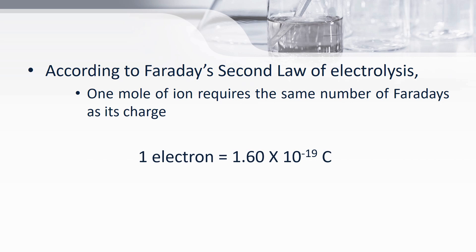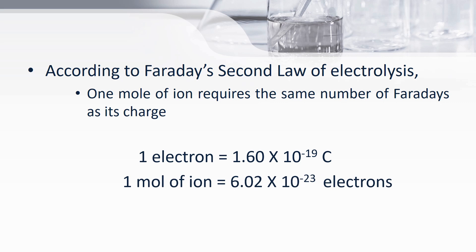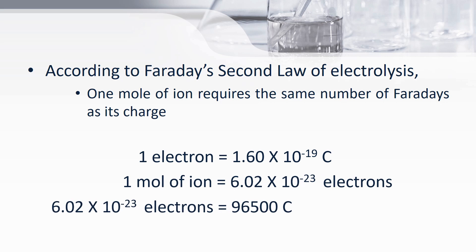We know that one electron contains 1.6 × 10⁻¹⁹ coulombs and one mole of ions contains 6.02 × 10²³ electrons. To find the number of coulombs in one mole of an ion, we multiply the number of electrons in one mole times the charge on one electron, which is 6.02 × 10²³ electrons times 1.6 × 10⁻¹⁹ coulombs. We get the charge on one mole of an ion as 96,500 coulombs. And since one mole of an ion contains the same number of Faradays as its charge, one Faraday contains 96,500 coulombs.